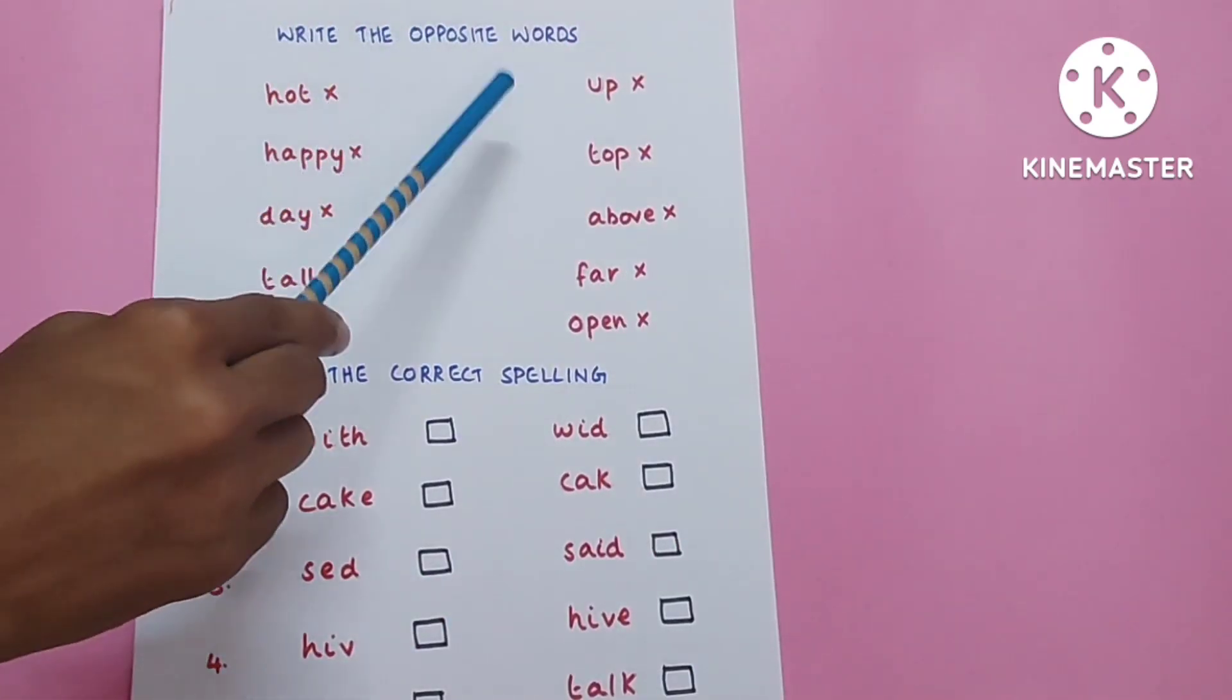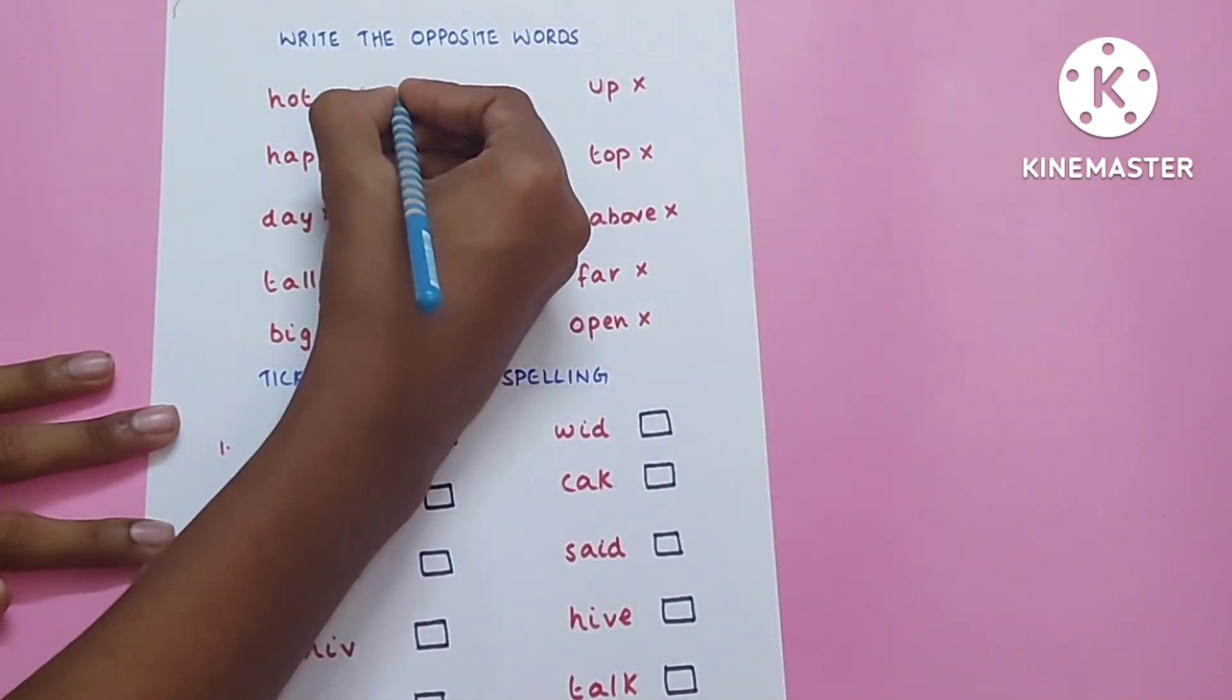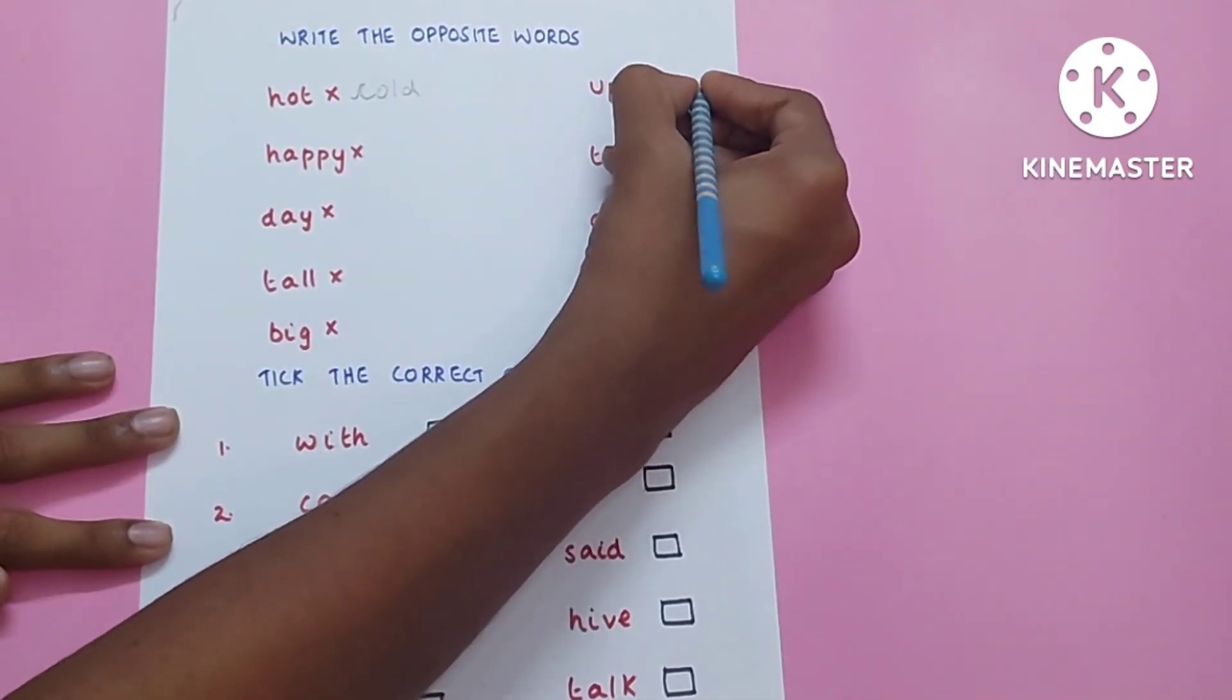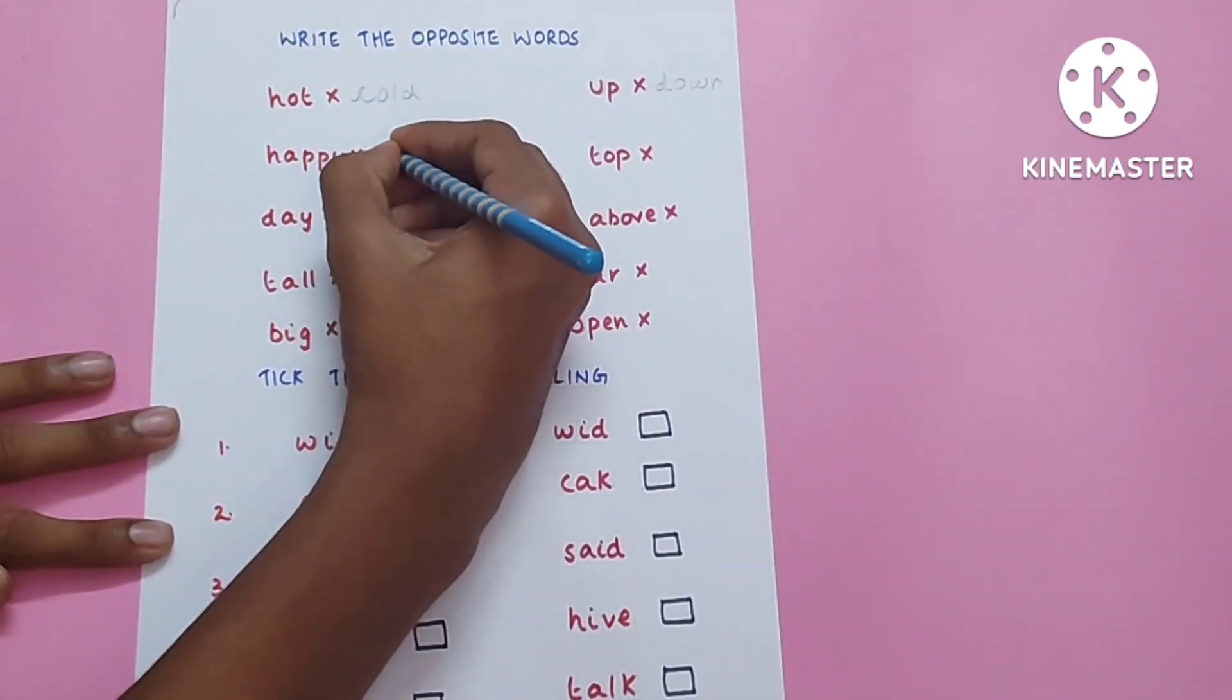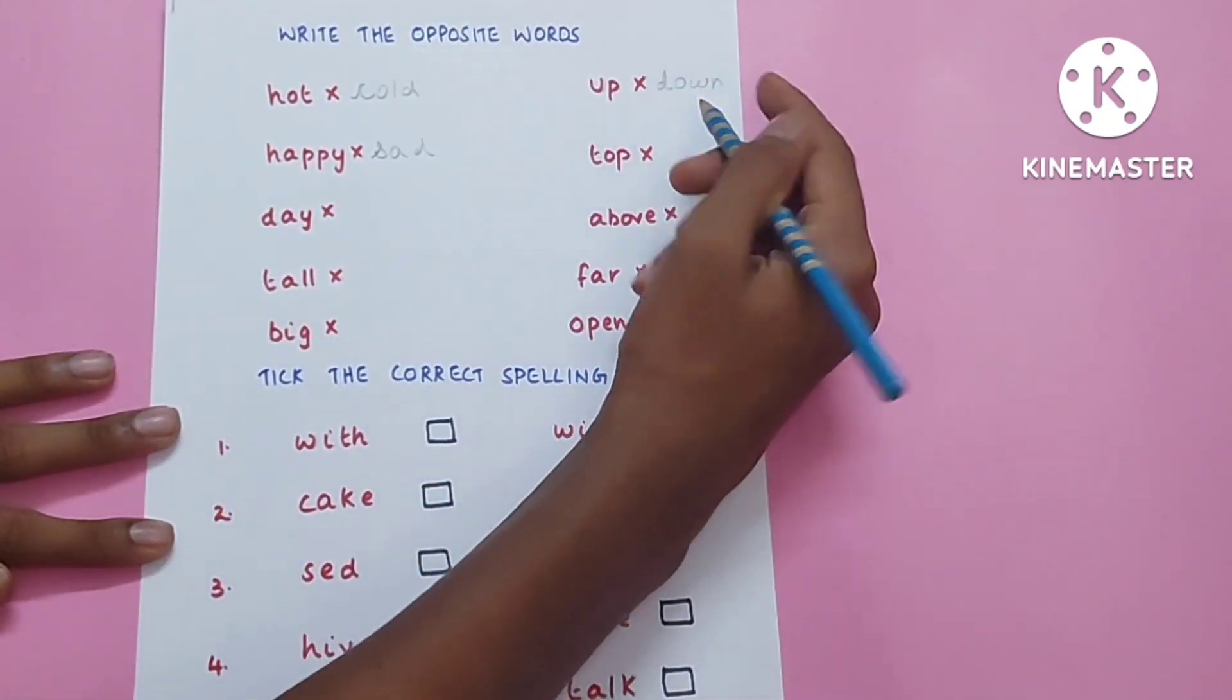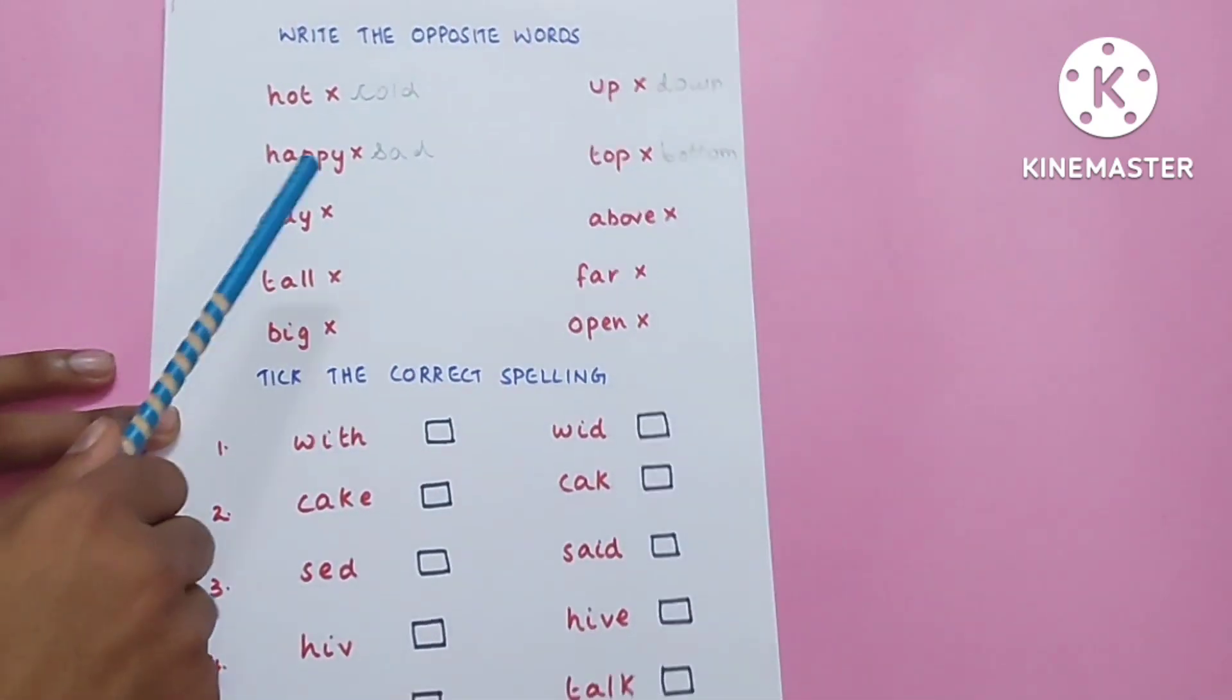Write the opposite words. Hot, cold. Up, down. Happy, sad. Top, bottom. Day, night.